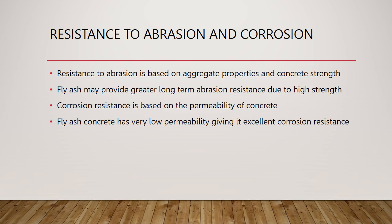The abrasion resistance of concrete is based entirely on the aggregate properties and the strength of the concrete itself. While fly ash may not directly impact the abrasion resistance, if the mix is designed to have a higher strength, this will increase the abrasion resistance. Corrosion resistance is based on the permeability of the concrete. Fly ash, with its much finer particles and large crystalline network, makes the concrete much less permeable. Using an electric conductivity test, which is used to test permeability, fly ash concrete is up to 29 times less conductive than regular Portland cement concrete.